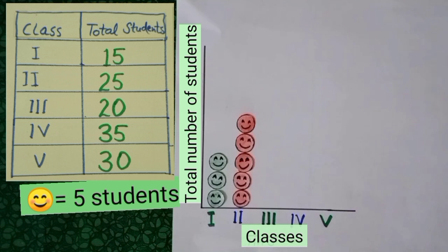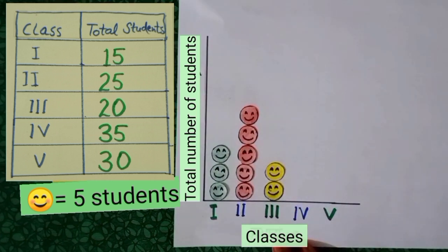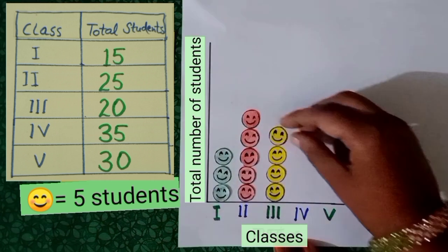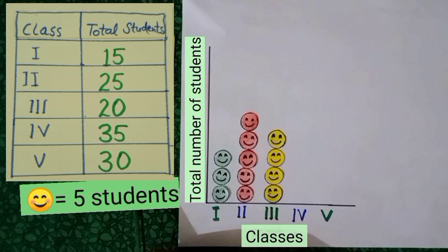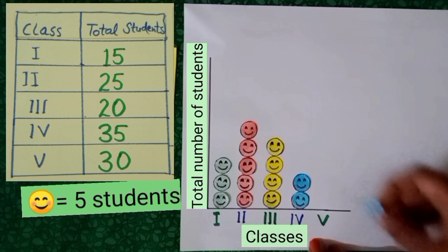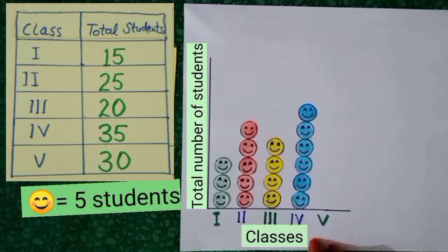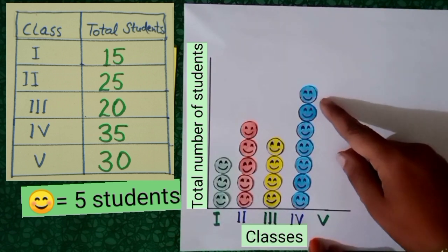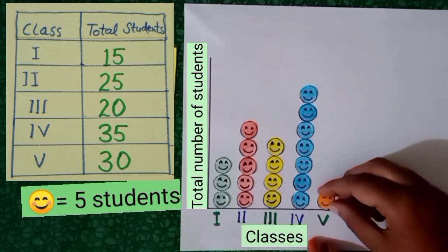Let's see the total number of students in 3rd class. Counting: 5, 10, 15. And in 4th class: 5, 10, 15, 20, 25, 30, 35. In 4th class there are 35 students.